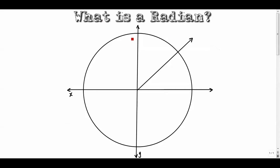A lot of times radians are a little bit easier to use because they have a nice relationship with radius, which is sort of what the word sounds like. I'm going to record this one pretty quickly, and then do three other quick ones about how to convert degrees to radians, how to draw angles in standard position, and some basic angle questions. After you watch those four, you should probably get into the unit circle.